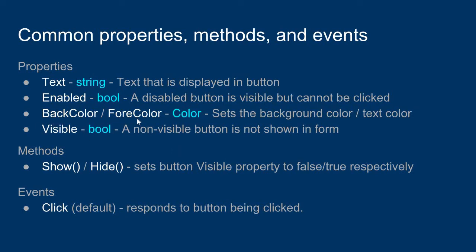The back color and fore color properties are self-explanatory. The visible property, if it is true, will let you see and click on the button. If the visible property is false, the button does not even show up. Some helpful methods you could use are the show and hide methods, which basically just set the visible property to true or false.